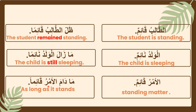مَادَامَ الأمرُ قائمًا. Notice how in the nominal sentence the ending is ضَمَّتَيْن, but when كَانَ وَأَخْوَاتُهَا enter the sentence it changes to فَتْحَتَيْن. For example, قائمٌ changes to قائمًا، and نائمٌ changes to نائمًا.